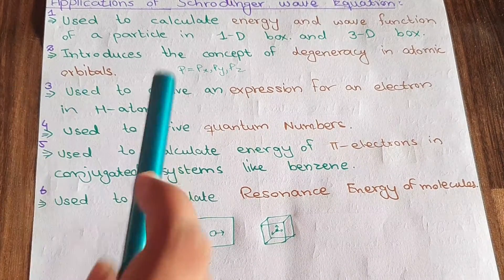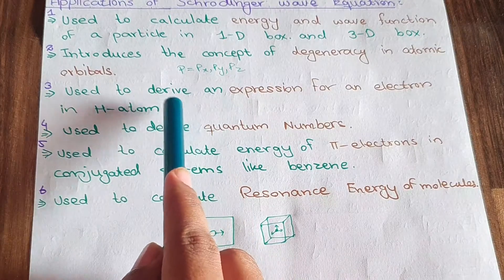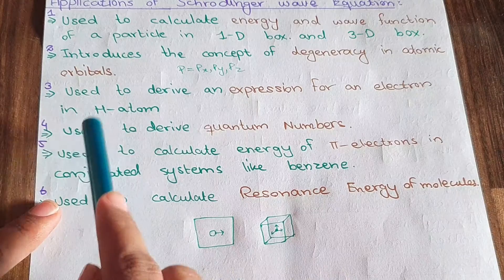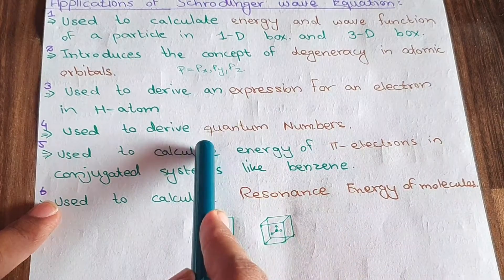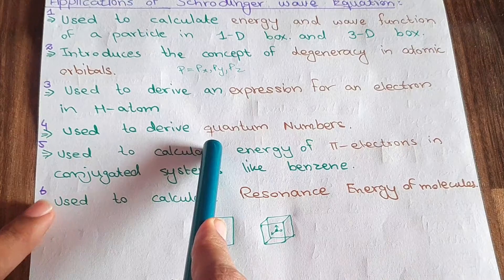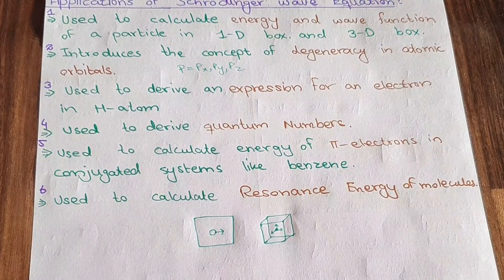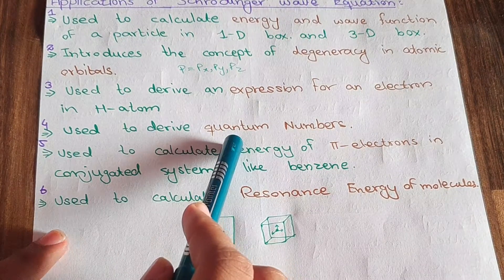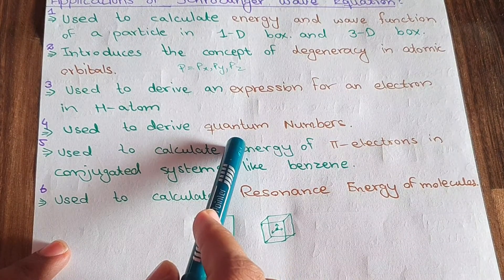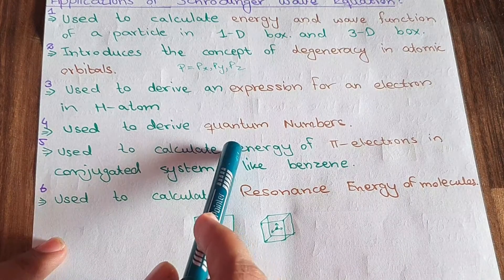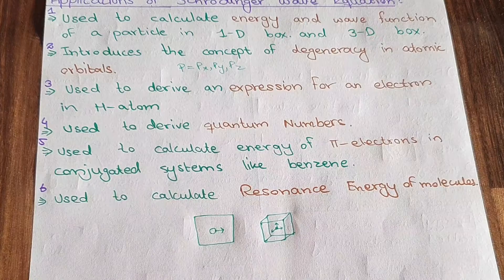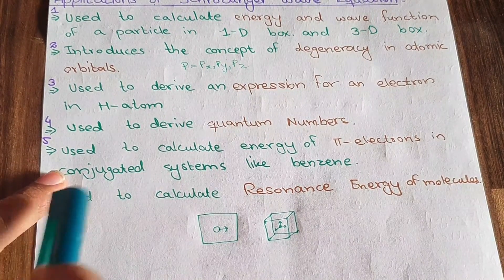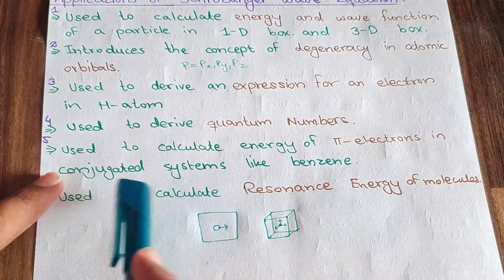Point number three: the Schrödinger wave equation is used to derive an expression for an electron in the hydrogen atom. It is also used to derive quantum numbers — the numbers used to describe the address of an electron in an atom — including the principal quantum number, azimuthal quantum number, magnetic quantum number, and spin quantum number.